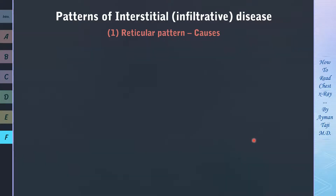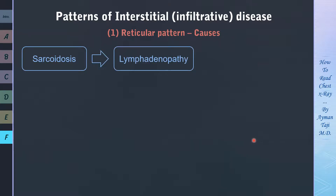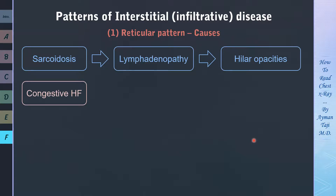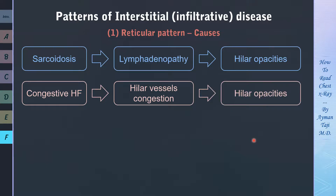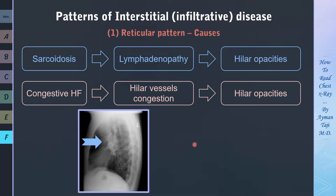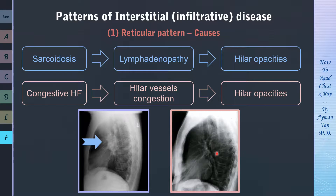Here's an important question: sarcoidosis causes hilar lymphadenopathy and therefore hilar opacities on the PA CXR view, but left-sided congestive heart failure also causes congestion in the hilar vessels and therefore hilar opacities too. How can we differentiate them? We can use the lateral view — in sarcoidosis, we can see a cauliflower-like mass corresponding to enlarged hilar lymph nodes, while in congestive heart failure we cannot.